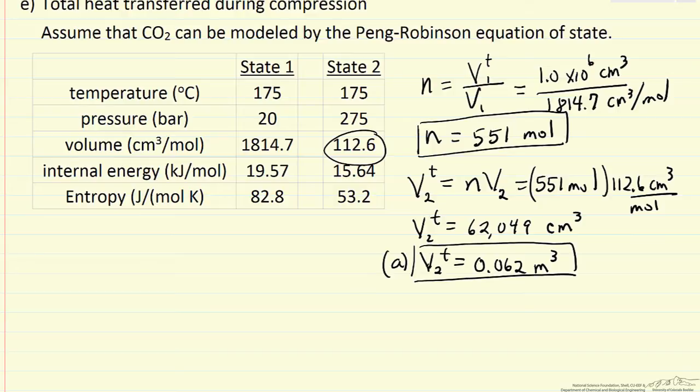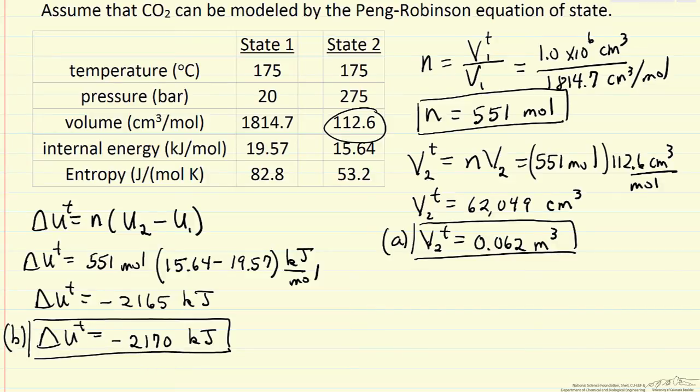Next, we want to calculate delta u. Delta u total is going to be the number of moles times u2 minus u1, where u2 and u1 are the kilojoules per mole obtained from the spreadsheet. The important thing to point out is, if this were an ideal gas, isothermally delta u would be zero. Notice that we have an internal energy change for the real gas; we would not have this for an ideal gas.